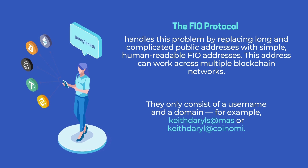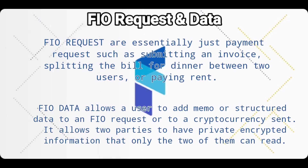A PU address only consists of a username and a domain. The registration of a PU address can be done directly through an application that has integrated the PU protocol, or through a hosted registration site that is open to the community. PU requests are essentially just payment requests, such as submitting an invoice, splitting the bill for dinner between two users, or paying rent. PU data allows a user to add a memo or structured data to a PU request or to a cryptocurrency sent, allowing two parties to have private encrypted information that only the two of them can read.